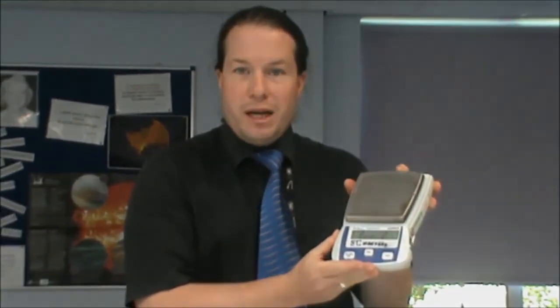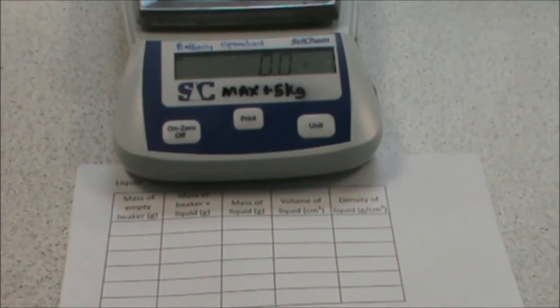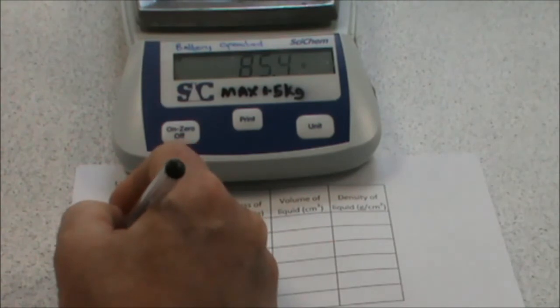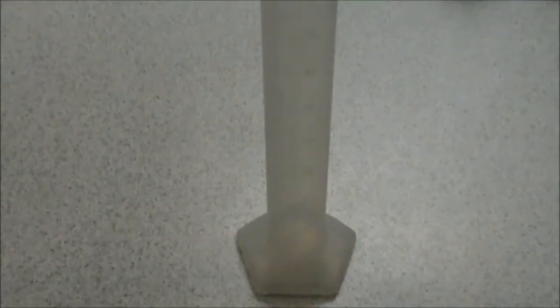We're now going to look at measuring the density of a liquid. In order to do this, you're going to need a measuring cylinder, a beaker and our old friend, the top pan balance. The first thing we need to do is measure the mass of our empty beaker. So there we have a mass of 85.4 grams. We're now going to measure out 100 millilitres or 100 centimeters cubed of our solution. This is a salt solution that is water with a certain amount of salt dissolved in it. We want to work out how much salt is in here.